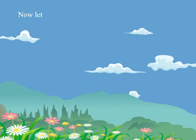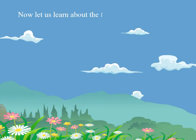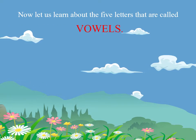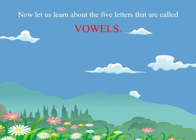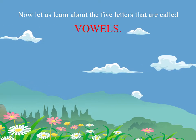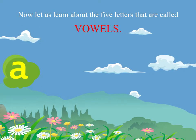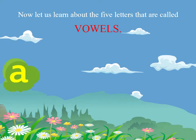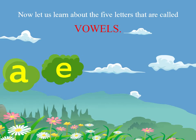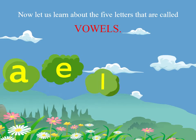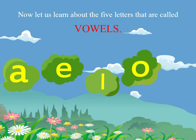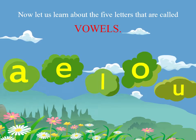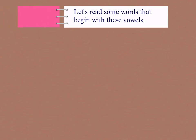Now let us learn about the five letters that are called vowels. They are A, E, I, O, U. Let us read some words that begin with these vowels.